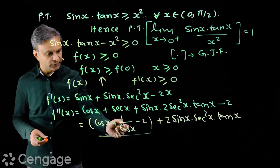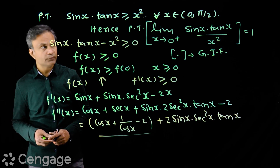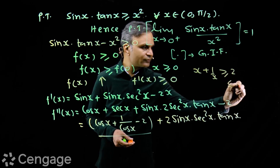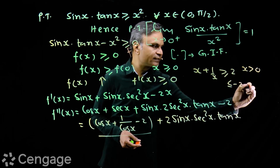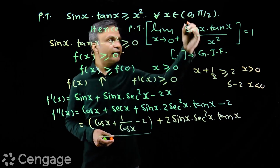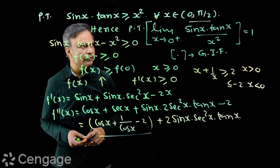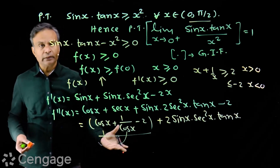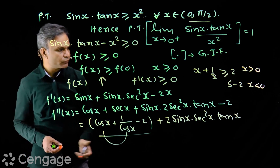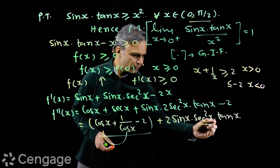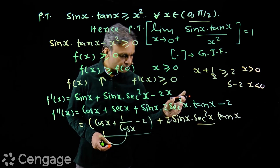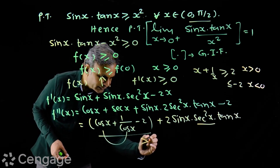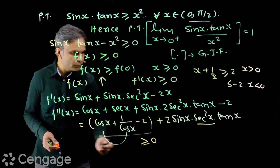cos x + 1/cos x will always be greater than or equal to 2 by the algebraic result that x + 1/x ≥ 2 for positive x and ≤ -2 for negative x. Here x is in the first quadrant where cos x is positive, so this is ≥ 2, making (cos x + 1/cos x - 2) ≥ 0. Also, 2 sin x · sec²x · tan x is always positive in the first quadrant. So f''(x) ≥ 0.